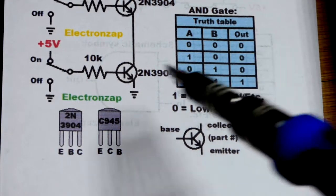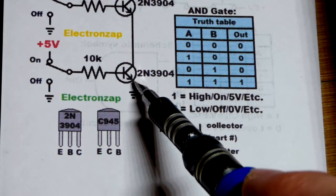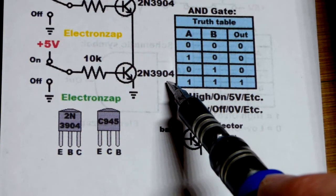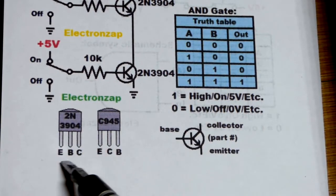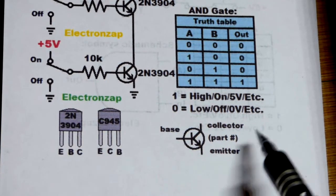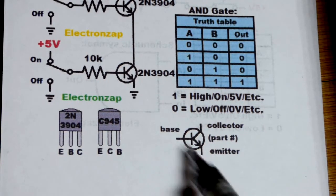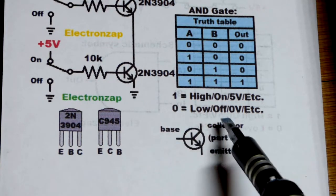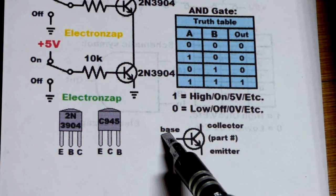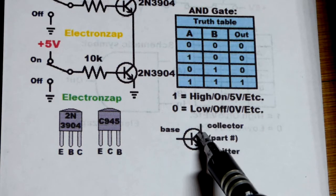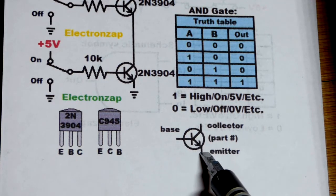And now quickly for some more NPN bipolar junction transistor review. I have the part number there, 2N3904, and there is the pin layout for the 2N3904. There's the NPN bipolar junction transistor schematic symbol. I wrote the pin names on there.